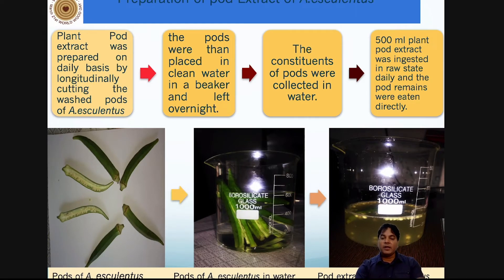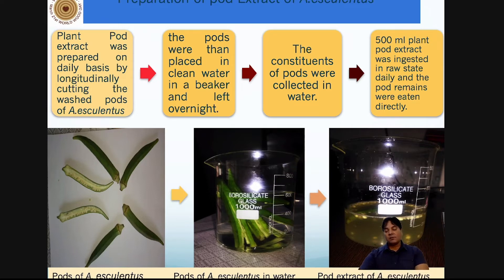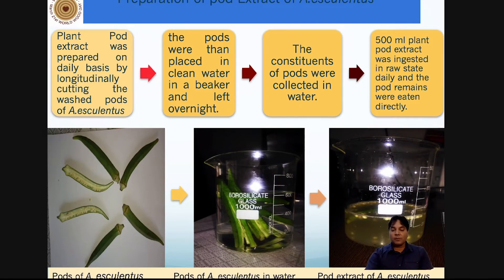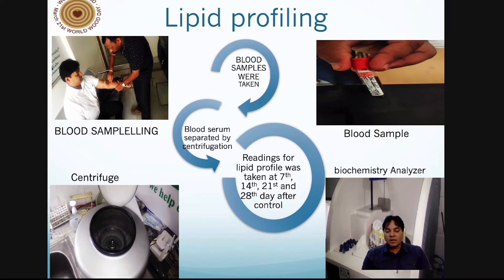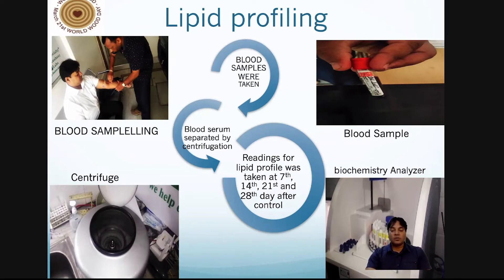I continued to drink this pod extract for one month. I selected myself as one patient and one more patient, making two samples in total. For 30 days, I drank this pod extract every morning on an empty stomach, preparing it the previous night using the same process. Readings were taken after the 7th, 14th, 21st, and 28th days, plus one control reading taken before ingesting any extract. Blood was drawn and processed through automatic centrifugation and a biochemistry analyzer — visible just behind my image — for lipid profiling of the two samples.